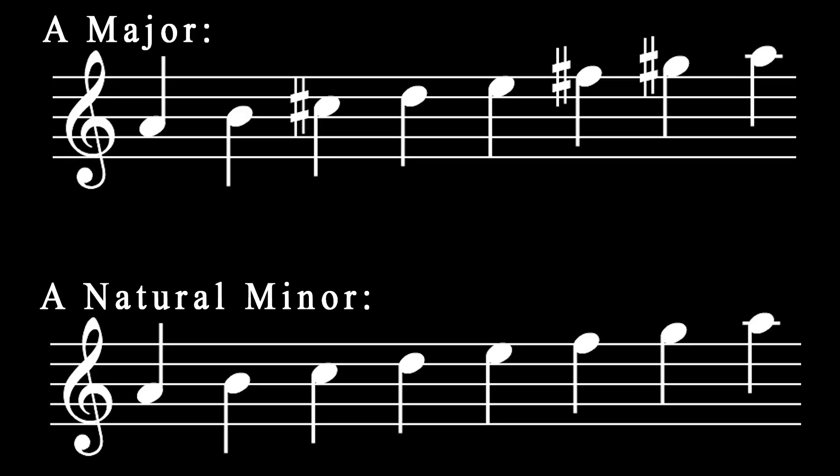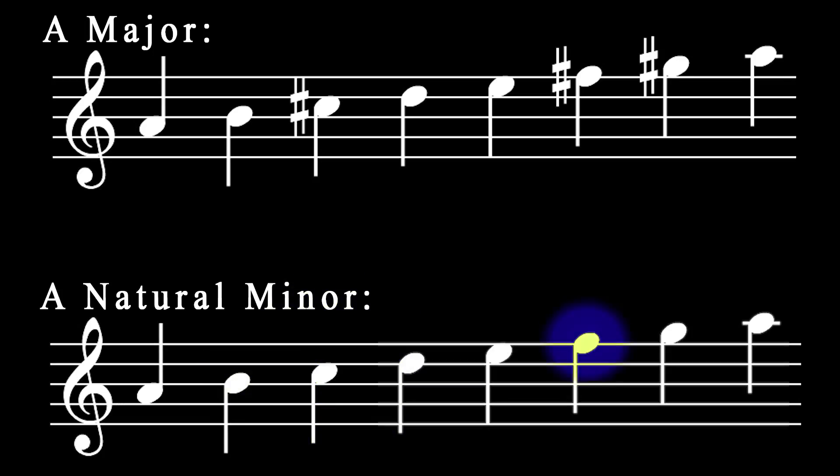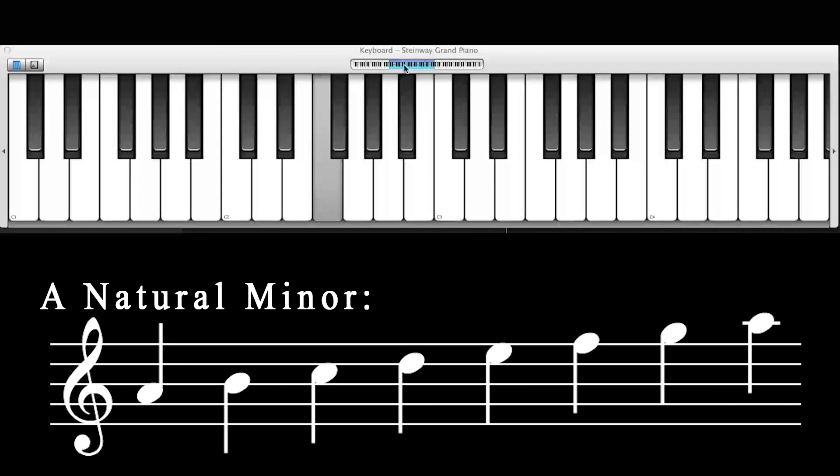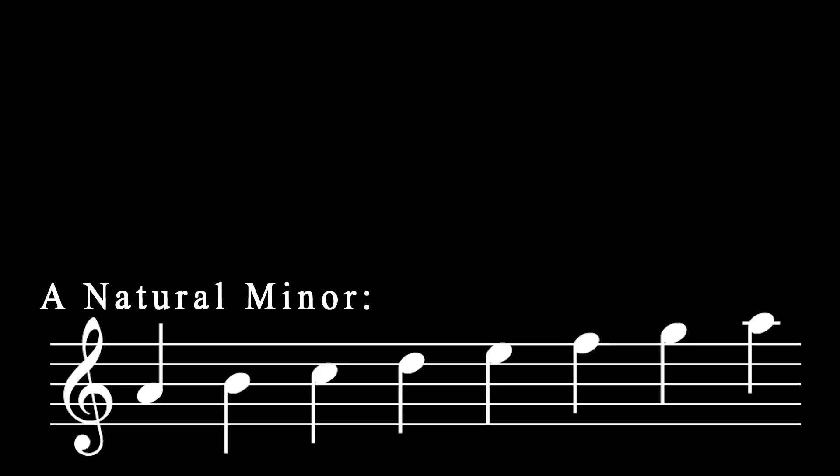In A major, the notes are the same as before. In A natural minor, many of the notes are the same, but the C sharp becomes a C, the F sharp becomes an F, the G sharp becomes a G. Here's how it sounds. Using scale degrees, we can see how all natural minor scales are different from major scales. To turn a major scale into a minor scale, flatten the 3rd, 6th, and 7th scale degrees by a half step.